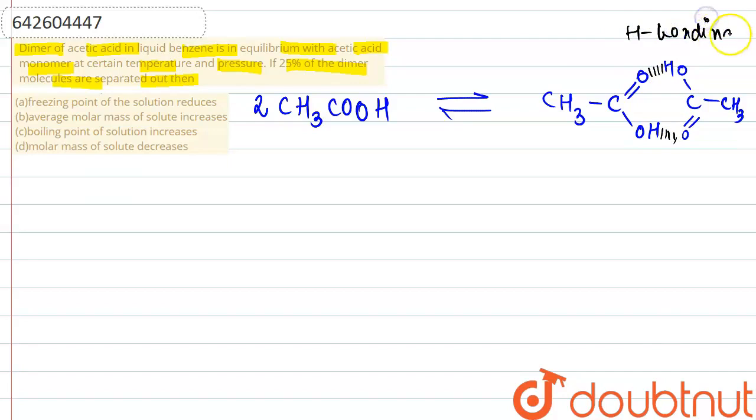So if we talk about the van't Hoff factor, then van't Hoff factor in the case of dimerization will obviously decrease because the number of molecules are decreasing. Earlier we had two molecules of acetic acid, now only one molecule of product is there, so van't Hoff factor will be less than one, it is going to decrease.